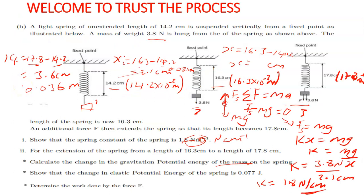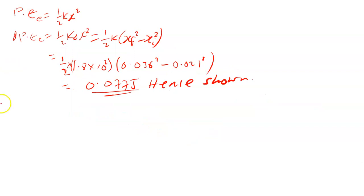The other question is saying, determine the work done by the force F. Directly, the work done by the force F can be found by saying the change in the elastic potential energy minus the change in the gravitational potential energy. Why are we doing this? Why are we saying the change between the elastic potential energy and the gravitational potential energy?